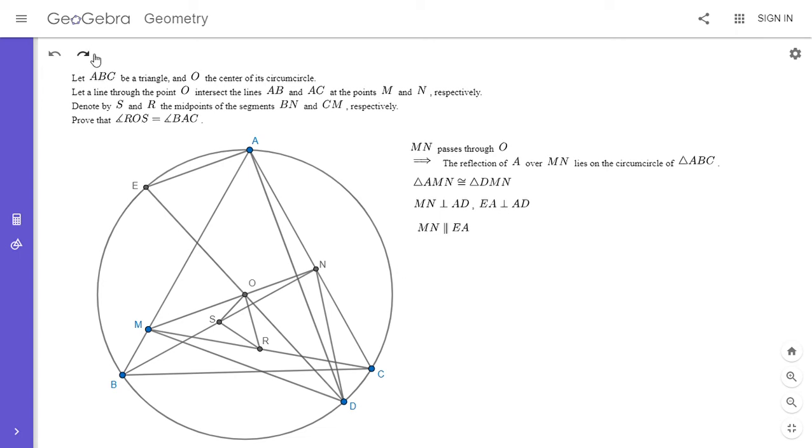Now I'm going to do that angle chase I mentioned. We want to show that triangle EBC is similar to triangle DNM. First, I'm going to calculate angle ECB. It's equal to angle EAB.